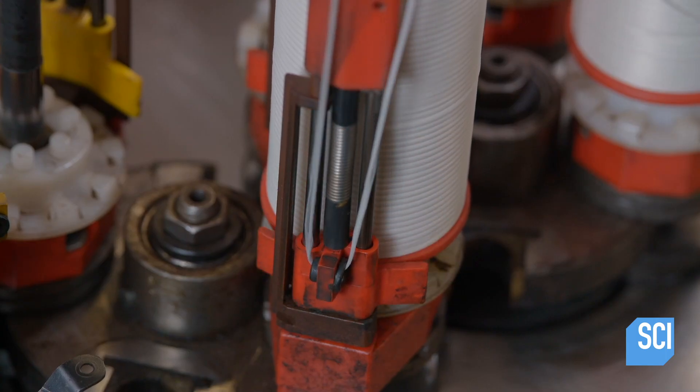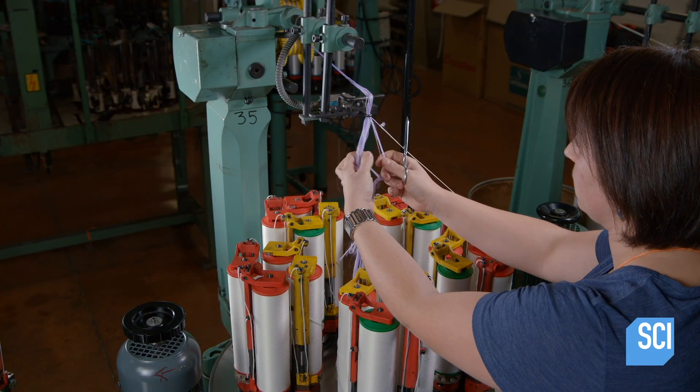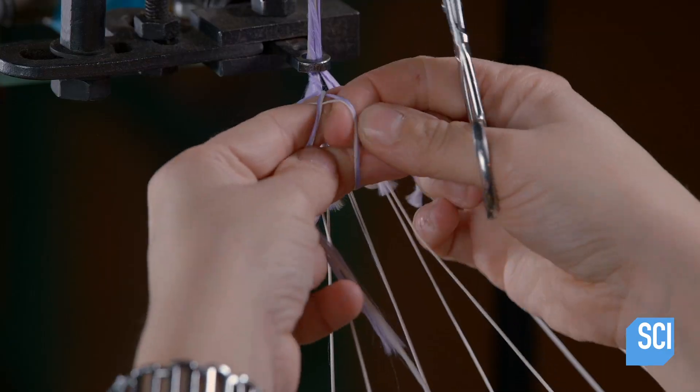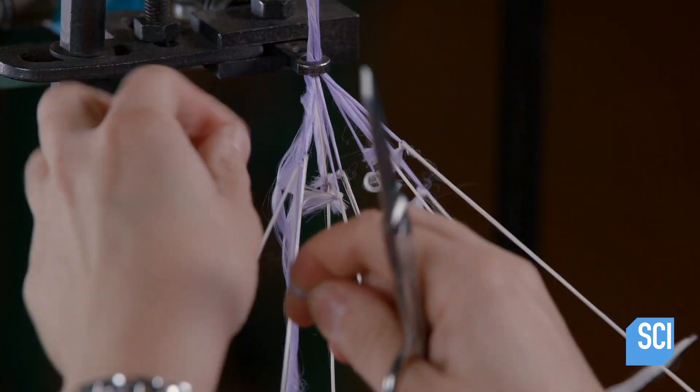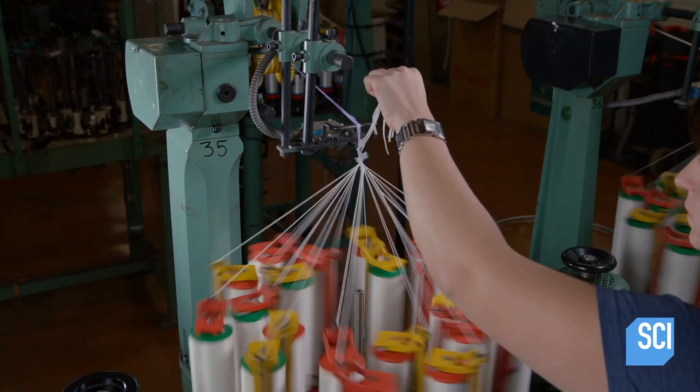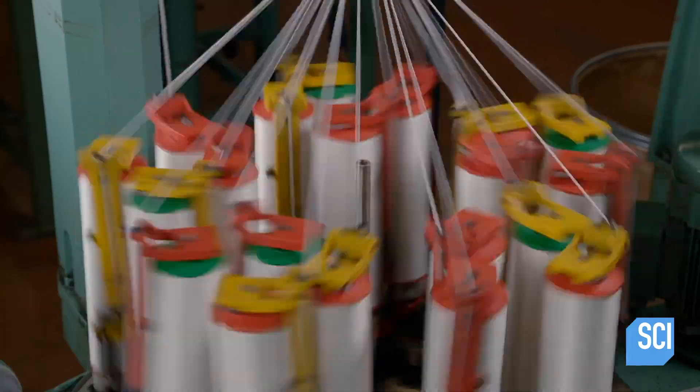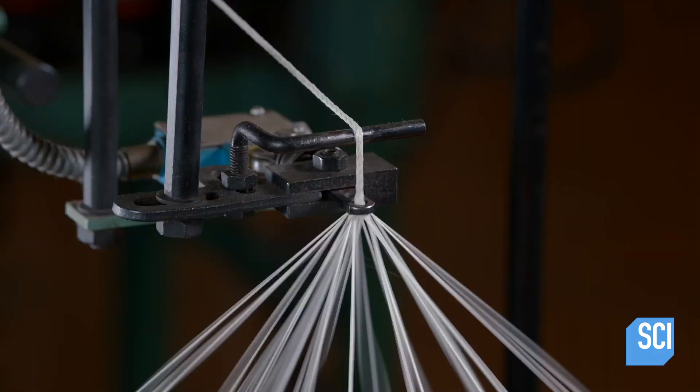She gathers half the threads and ties knots in them so that they'll catch when she feeds them into the machine. She starts up the braiding machine. It draws in the knotted threads, which pull in the unknotted ones.